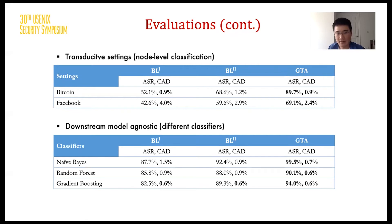GTA has no assumption about downstream models or classifiers. By default, we use a fully connected layer as the classifier. Here, we also evaluate the use of different classifiers, as shown in the bottom table. We find that not only GTA, but both baselines also have good attack performance, which demonstrates that our Trojaning technique is downstream model agnostic.